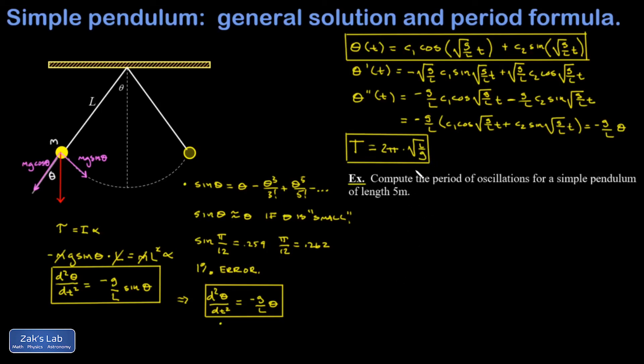Applying this to a quick example, we're asked to get the period of oscillations for a simple pendulum of length 5 meters. So I just plug in 5 for L, 9.8 for G, and crunch the numbers, and I get 4.49 seconds.